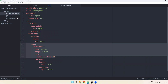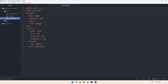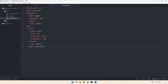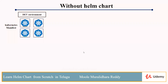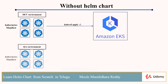We also have an HPA. You can see the namespace, the service.yml, and the namespace defined as dev. You can use these manifest files and deploy them in Kubernetes.